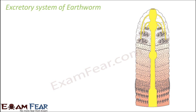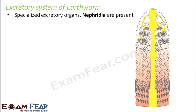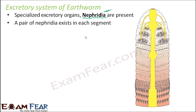So how does excretion happen in the case of earthworm? There will be so many impurities inside the body dissolved in blood or in water. For that there is a specialized excretory system, and there are specialized excretory organs present inside the earthworm. These specialized organs are called nephridia. Let us see where we find these nephridia.